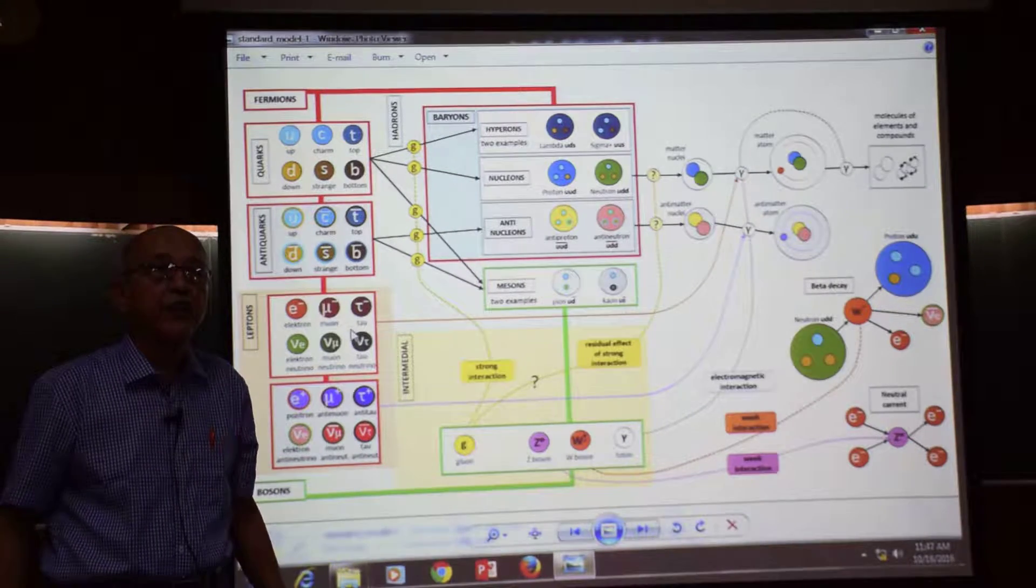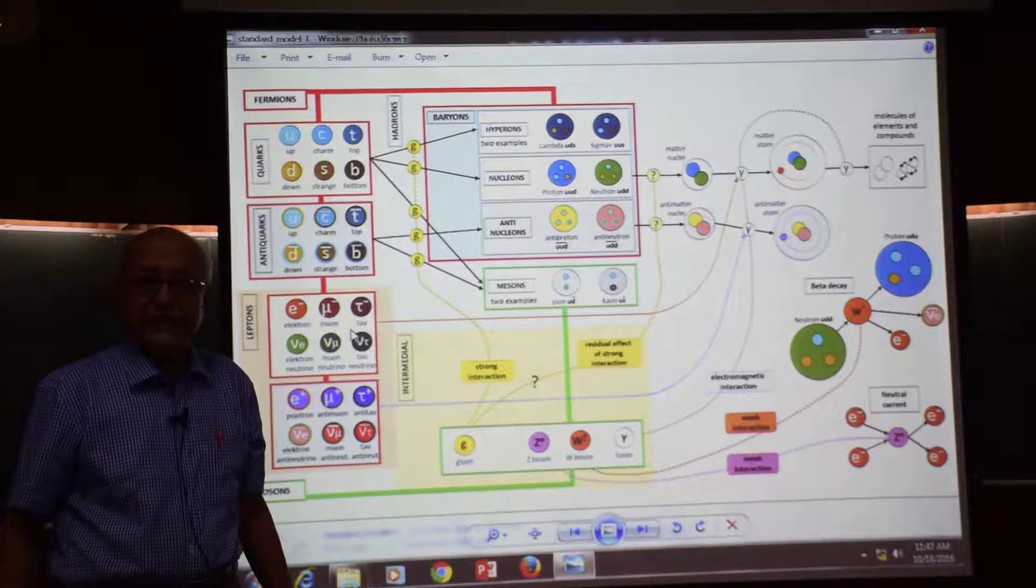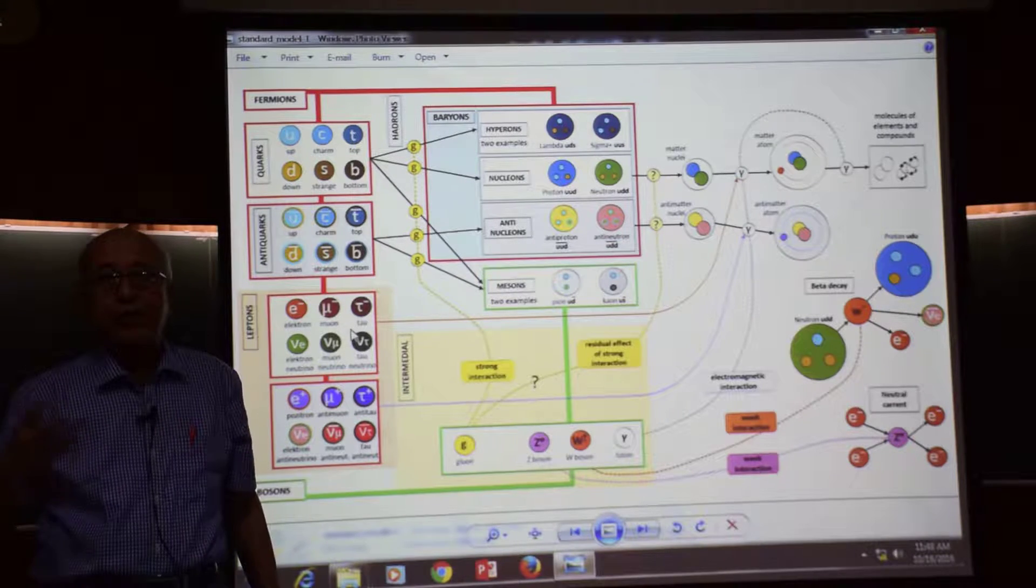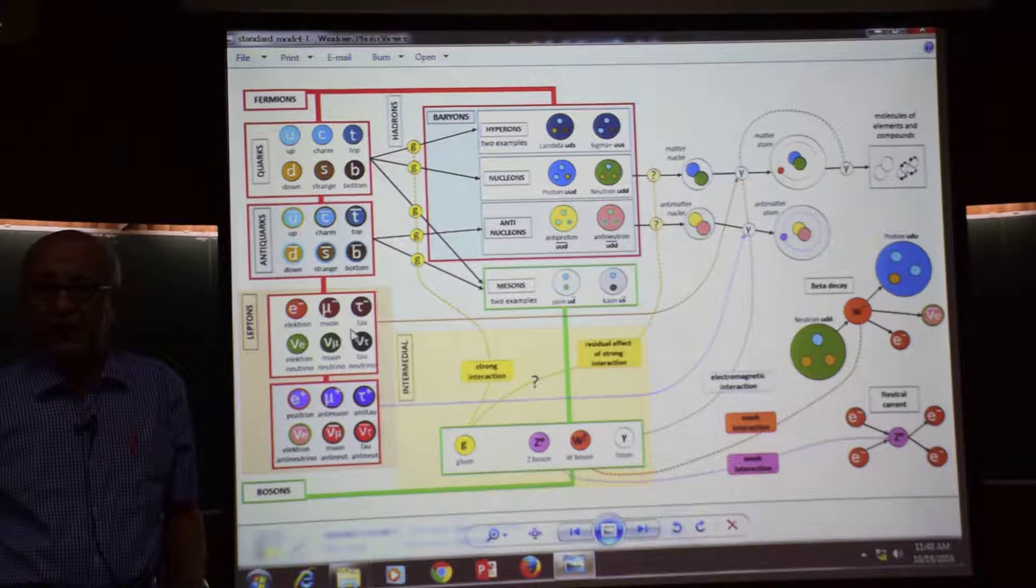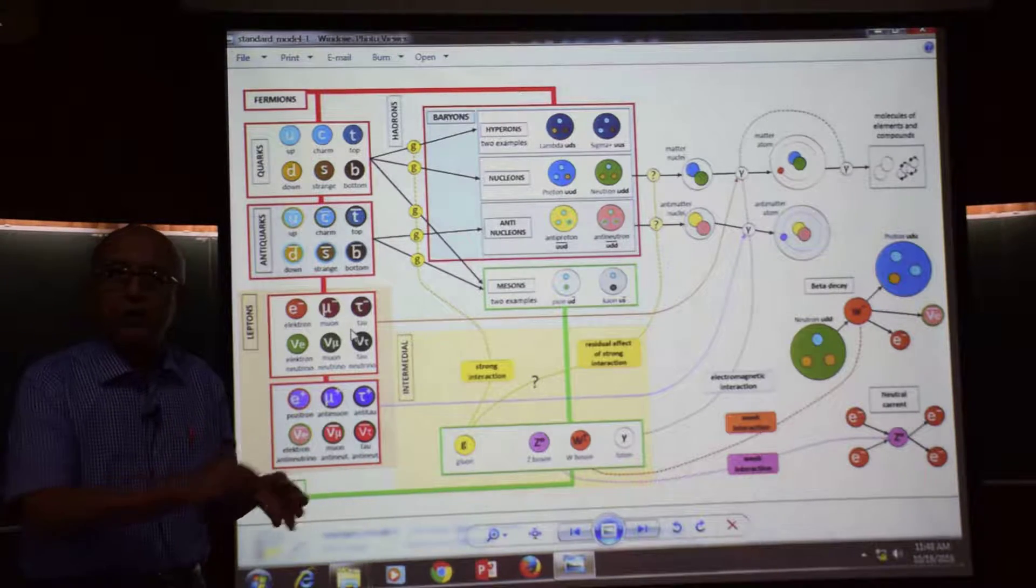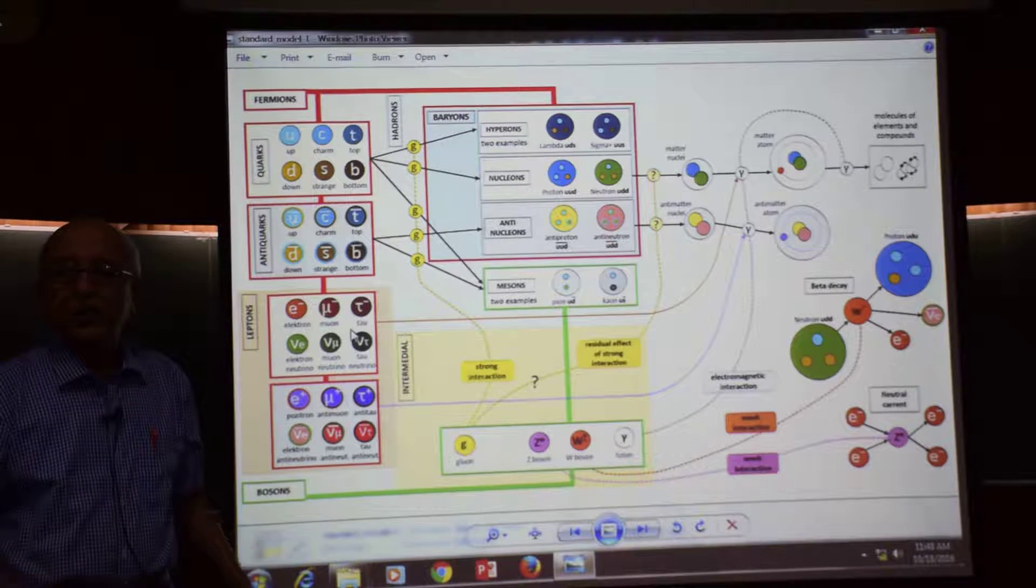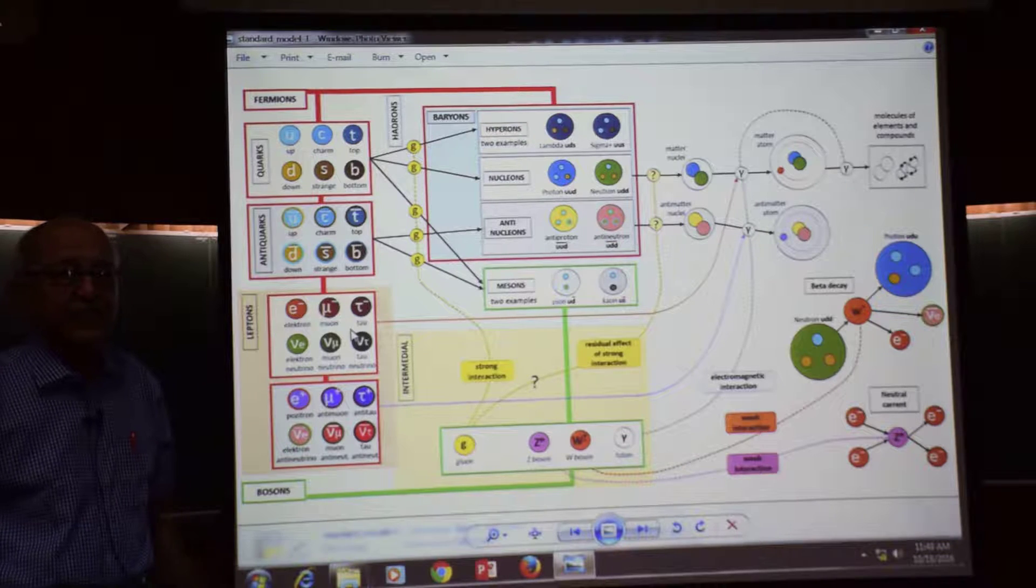So once a neutrino is produced, it will remain there forever, except for a small probability that it may change type from electron to mu because of oscillation. But otherwise the neutrinos are there. Now as you will see in our talk, unlike the previous one, the neutrinos are not heroes. But you will find that in some sense they are kind of villains. You will see why.